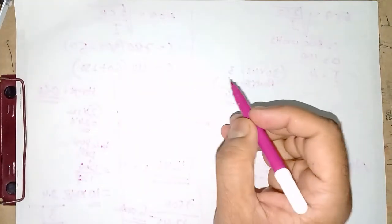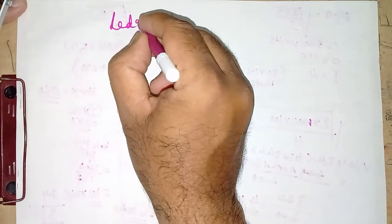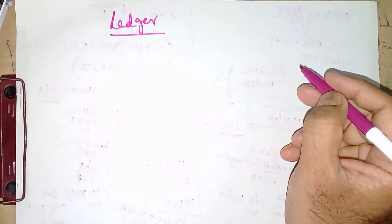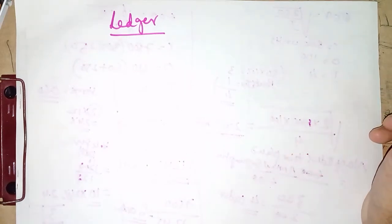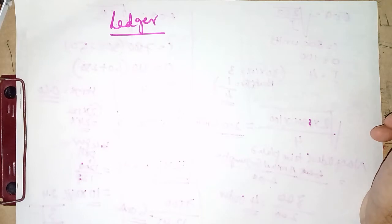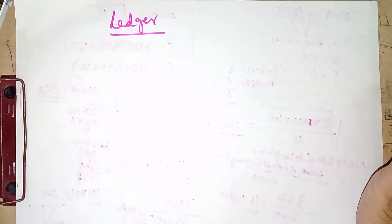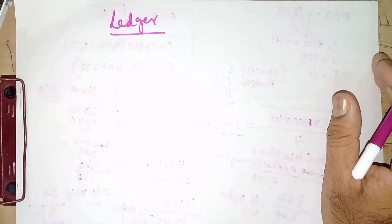Hello friends, in this video we will try to understand the concept of ledger — one of the most important concepts of accounting. As you are already aware, I have explained the concept of journal in my previous videos. If you did not watch those videos, do watch them on my channel. Now in this video I will explain the concept of ledger. As we discussed earlier, journal is a primary book in which all transactions are recorded in chronological order. Ledger is a final book in which transactions are posted from journal to ledger.